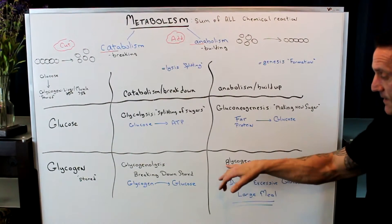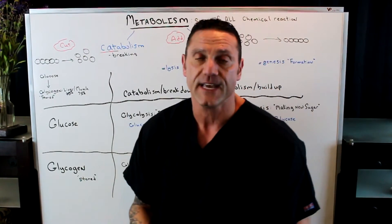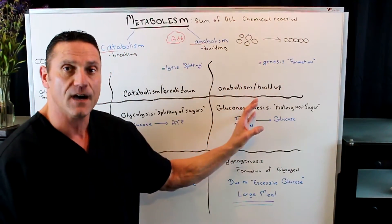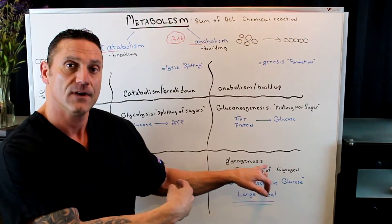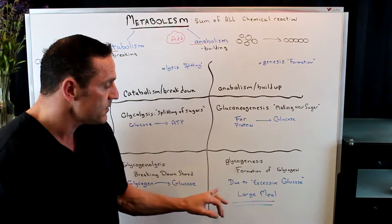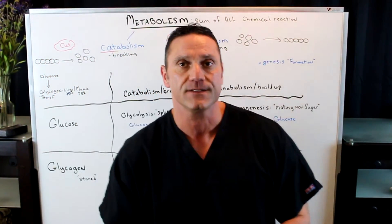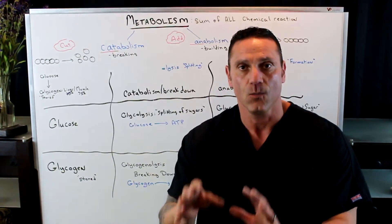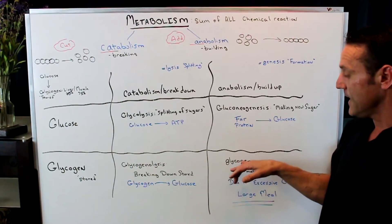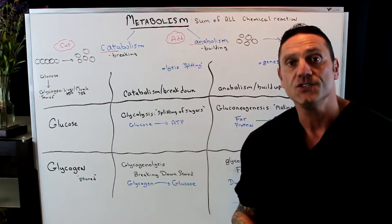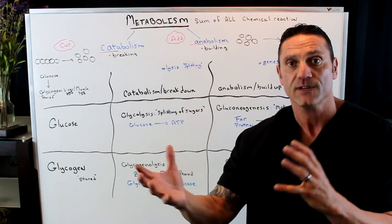These are definition terms. And then we have glycogenesis. Glycogenesis — remember, genesis is building up — it's the formation of glycogen. When does this occur? This occurs when we take in excess food, too many carbohydrates — we have to store it. We store it in a process called glycogenesis, and this is due to excessive amounts of glucose. This is when we're eating just too much.